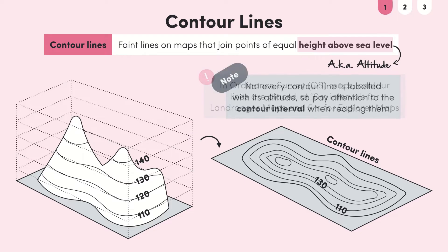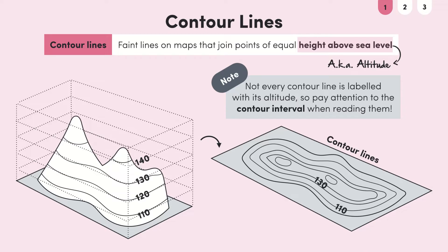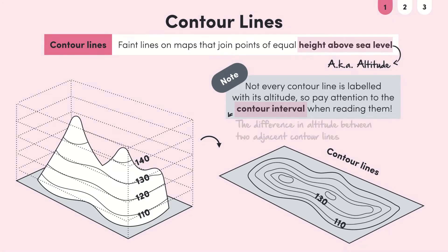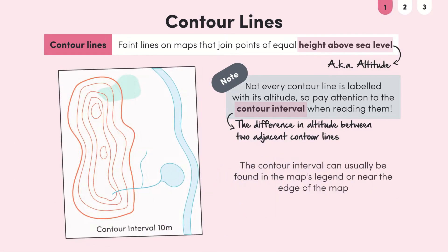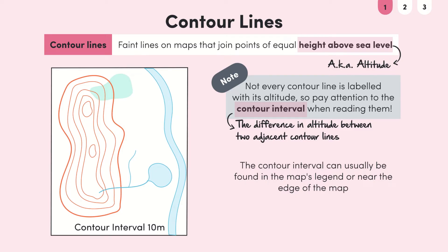One thing to watch out for is that not every contour line is labeled with its altitude. This means you'll need to make sure you pay attention to the contour interval when reading contour lines. This is just the difference in altitude between two adjacent contour lines and is usually found in the map's legend or near the edge of the map.